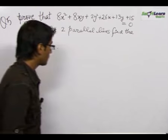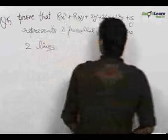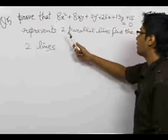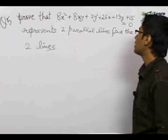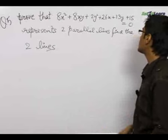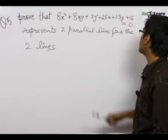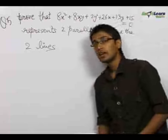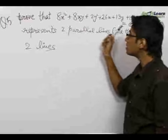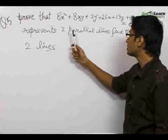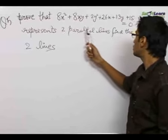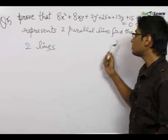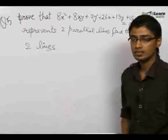In our next problem, we are given a pair of straight lines: 8x² + 8xy + 2y² + 26x + 13y + 15 = 0. We want to find out if this equation represents two parallel lines or not, and if they are two parallel lines, we want to find the two lines.